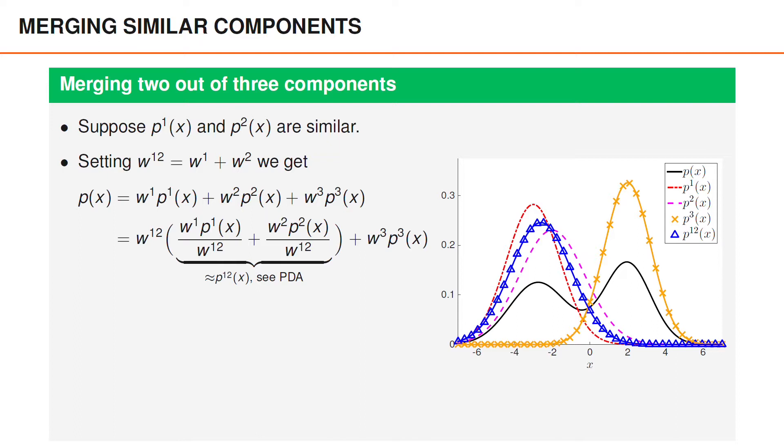Now, since the density within the parentheses is a Gaussian mixture where p^1 and p^2 are similar, we should be able to approximate that density fairly accurately using the techniques from the PDA videos. I have illustrated the density p^12 in the figure, and you can see that it is some kind of trade-off between p^1 and p^2. We now obtain an approximation to the Gaussian mixture, where we have replaced the first two components with a single component. The approximation p acute is illustrated using a green curve marked with squares, and at least in this example, that density is very similar to the original mixture in black.